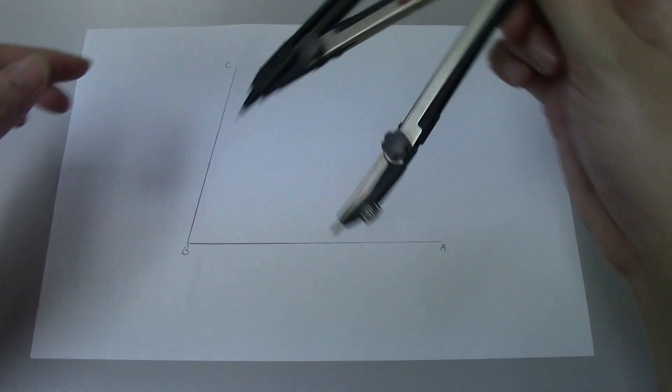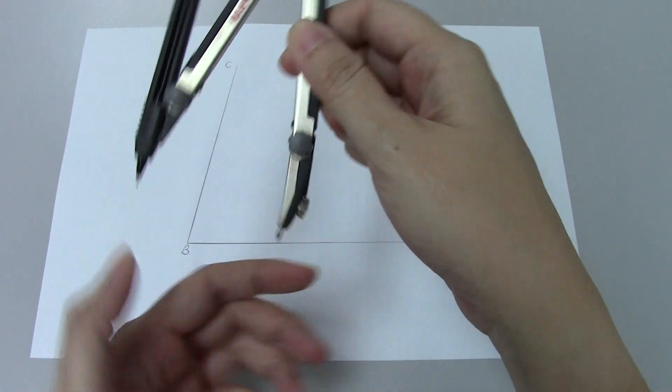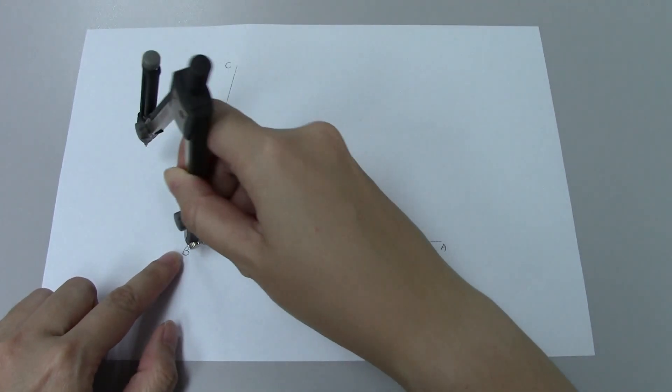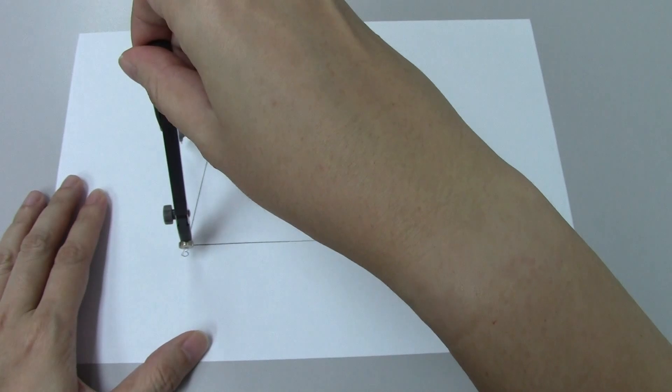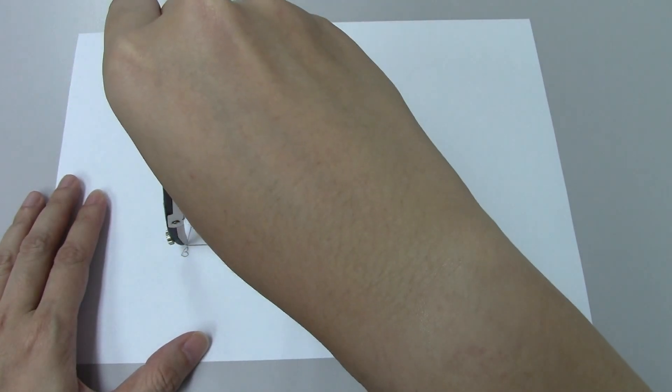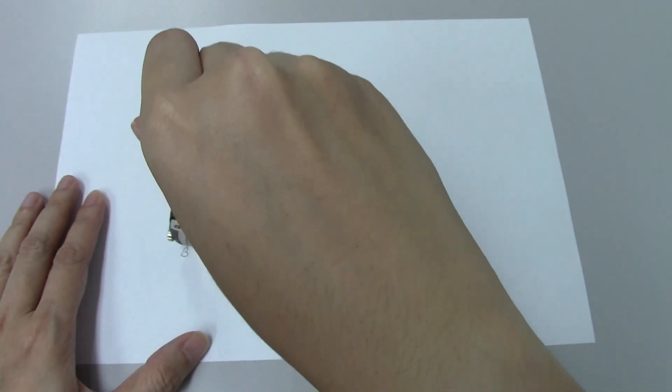Step one, we're going to adjust our compass to any width that you like and place the needle point on point B over here. And we're going to draw an arc on line BC and then on line AB.